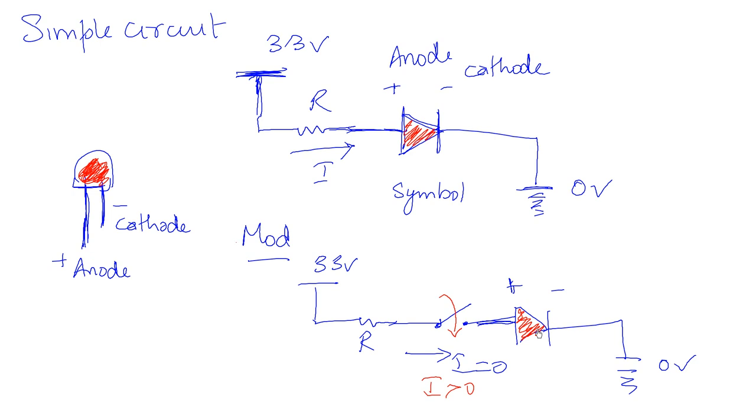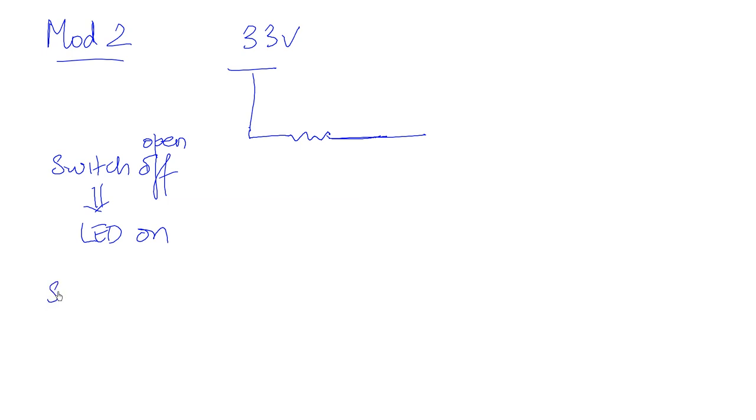One where the switch is not controlling it in a positive way but we want the switch to control it in a negative way. So we will design a new modification of the circuit, mod 2. Mod 2 is going to use the same setup where we have a switch and an LED, but the idea here is that when the switch is open the LED is on, and when the switch is closed the LED is off.